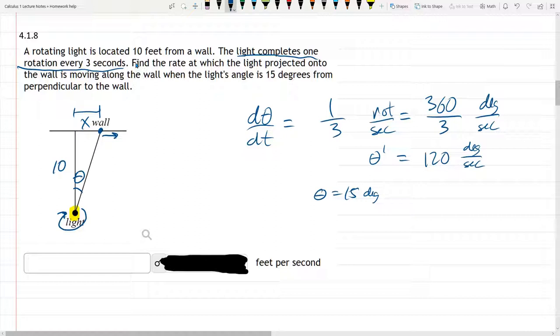And I think it would be reasonable to call this distance right here, x. You can call it y, you can call it something else. I'm just going to call it x. So I have two variables, theta and x, and I want to relate them in an equation.